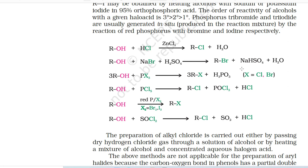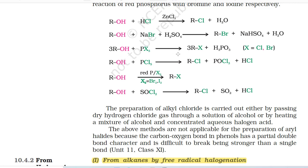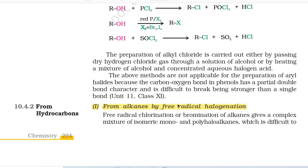ROH + NaBr + H2SO4 → RBr + NaHSO4 + H2O. 3ROH + PX3 → 3RX + H3PO3 (where X = Cl, Br). ROH + PCl5 → RCl + POCl3 + HCl. ROH (red P/X2, where X2 = Br2, I2) → RX. ROH + SOCl2 → RCl + SO2 + HCl. With tertiary alcohols, the reaction is conducted by simply shaking with concentrated HCl at room temperature. The order of reactivity of alcohols with a given haloacid is: tertiary > secondary > primary. These methods are not applicable for the preparation of aryl halides because the carbon-oxygen bond in phenols has partial double bond character and is difficult to break.